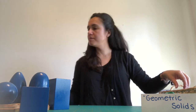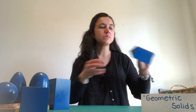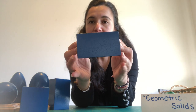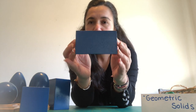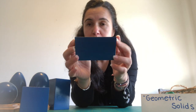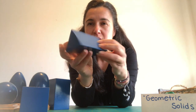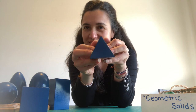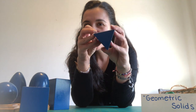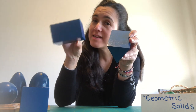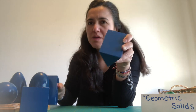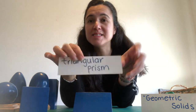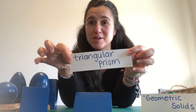Next is this one. This one has rectangles too. But look — that's a triangle. So this one was called rectangular prism. So what do you think this one is going to be? Triangular prism.